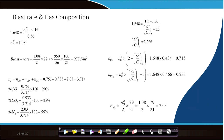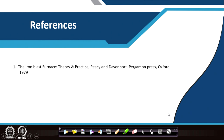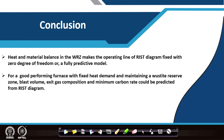This worked example shows how the Rist diagram operating line can be used practically. The reference book for this material is Davenport, available as a free e-book online. In conclusion: the heat and material balance of the wüstite reserve zone makes the operating line of the Rist diagram fully fixed with zero degrees of freedom — a fully predictive model, since two points uniquely define the straight line.